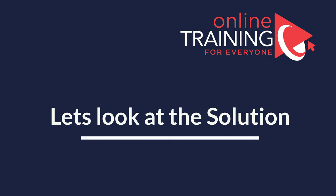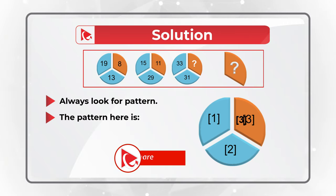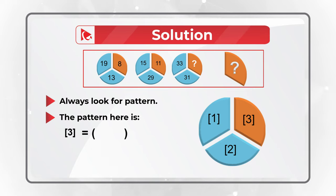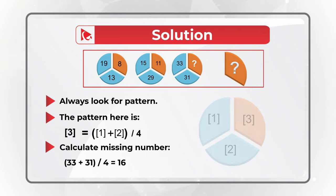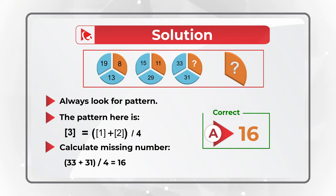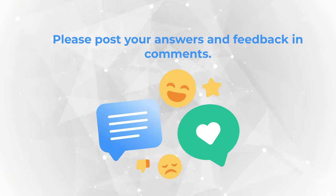You need to always look for patterns to solve these types of problems. The pattern here is that section three of the circle is calculated as sections one plus two divided by four. So to calculate the missing number, you add 33 plus 31 and then divide the sum by four, and you get 16. Hopefully you've enjoyed this tricky question and now know how to answer similar problems on the test.